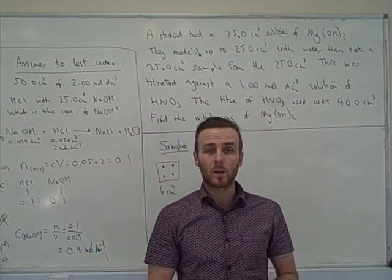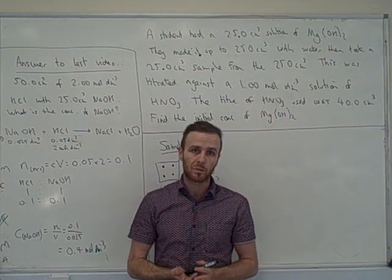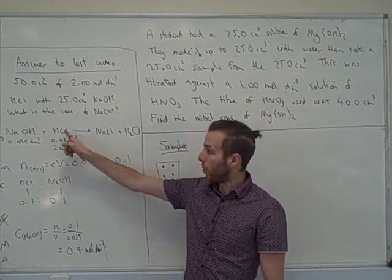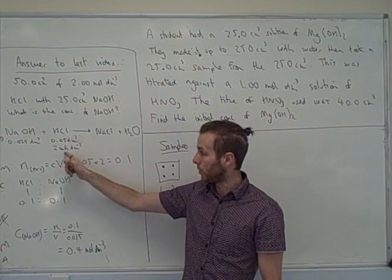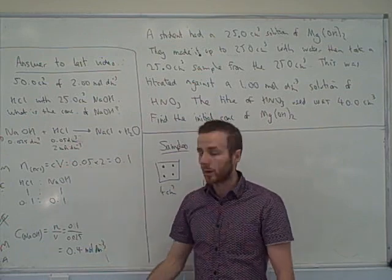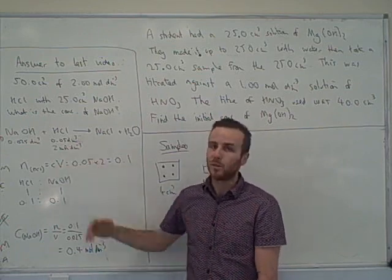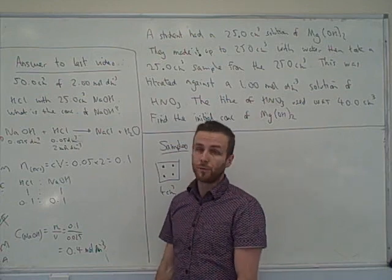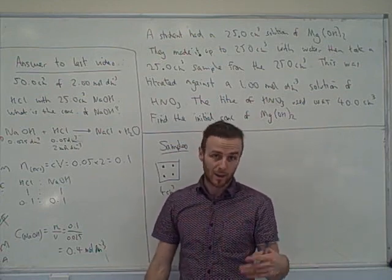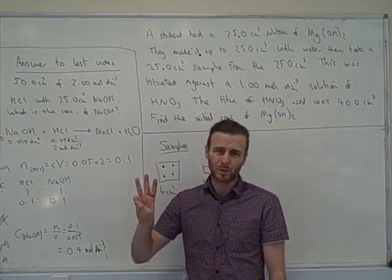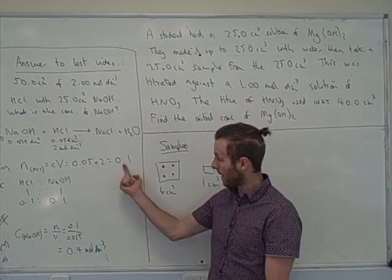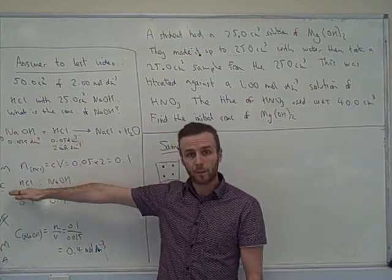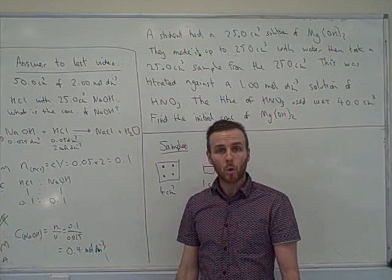The 'My' stands for moles, and your first moles equation always starts 'moles equals.' You can find the moles of HCl by doing volume times concentration. If given mass, use moles equals mass over Mr. If given the volume of a gas, use volume divided by 24. There are only three to choose from, and that gives us 0.1 moles.